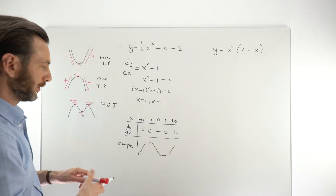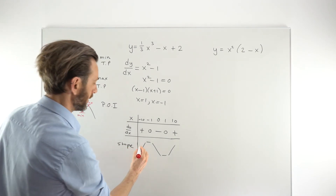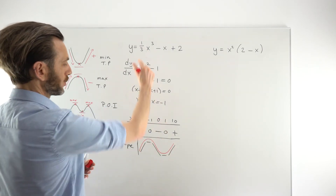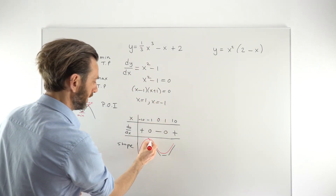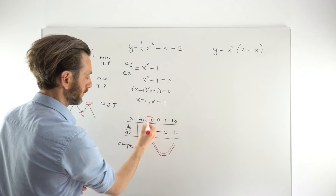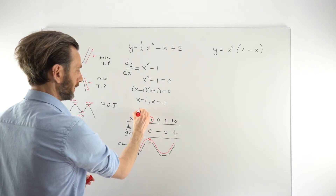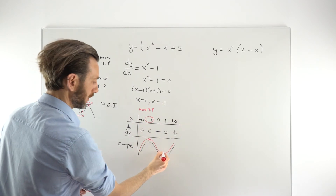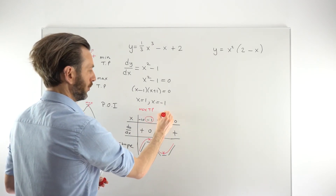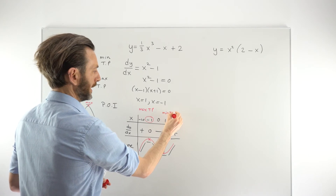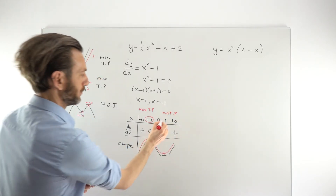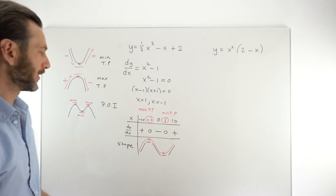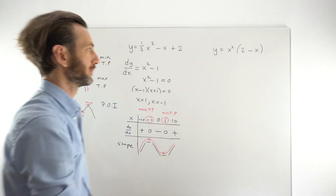So the shape goes: up, zero, down, zero, then back up. That's a mini sketch of the graph — in reality it would be curved, making the familiar cubic shape. This tells us that the stationary point with x-coordinate minus 1 is a maximum turning point, and the one at x equals 1, which is at the bottom, is a local minimum turning point.